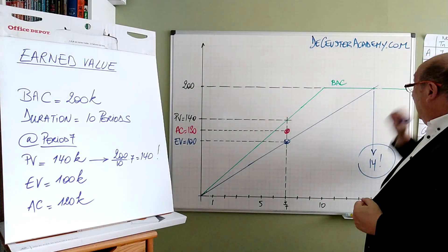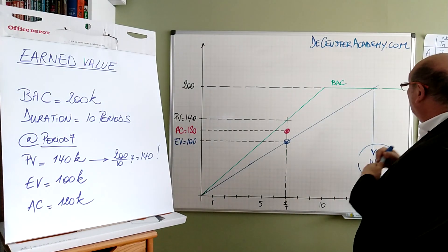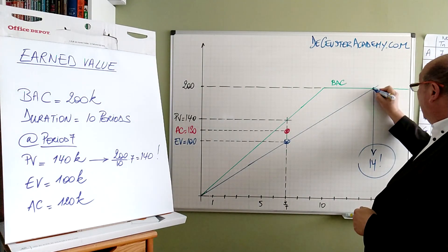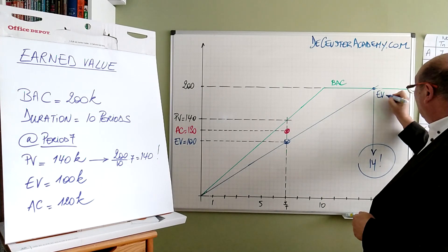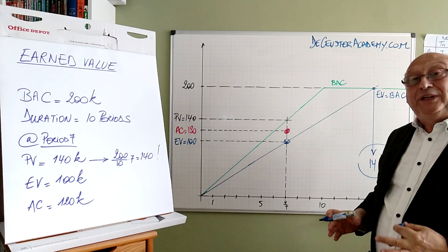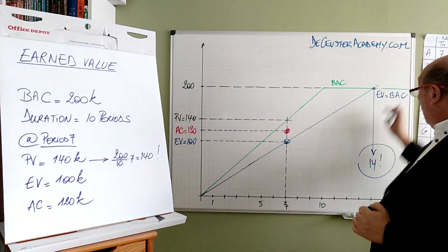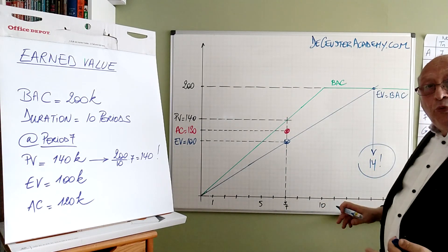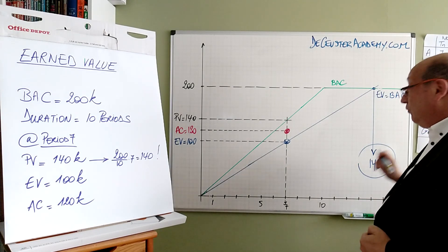Basically, when I create an earned value which is equal to the BAC, EV is equal to the BAC, it means that all the work has been completed. Now we want to know how many weeks, what are the periods. I look here at 14.